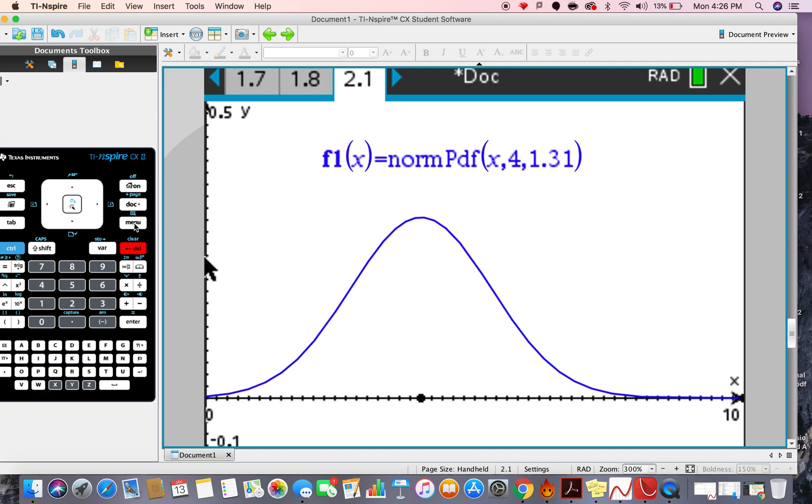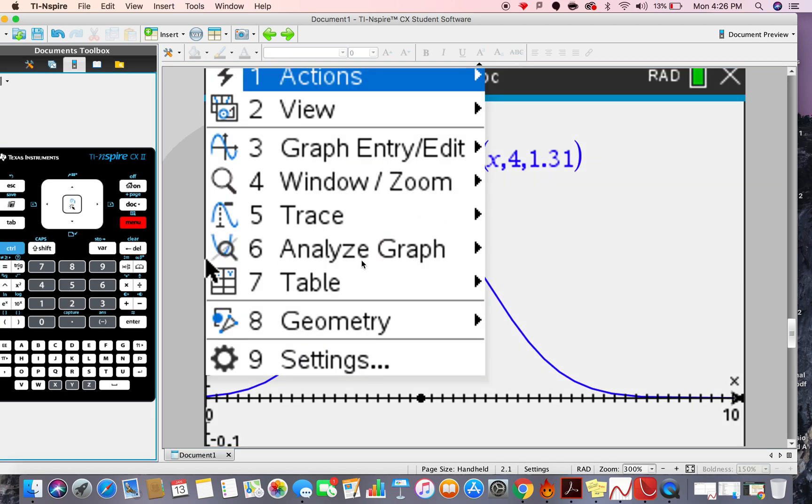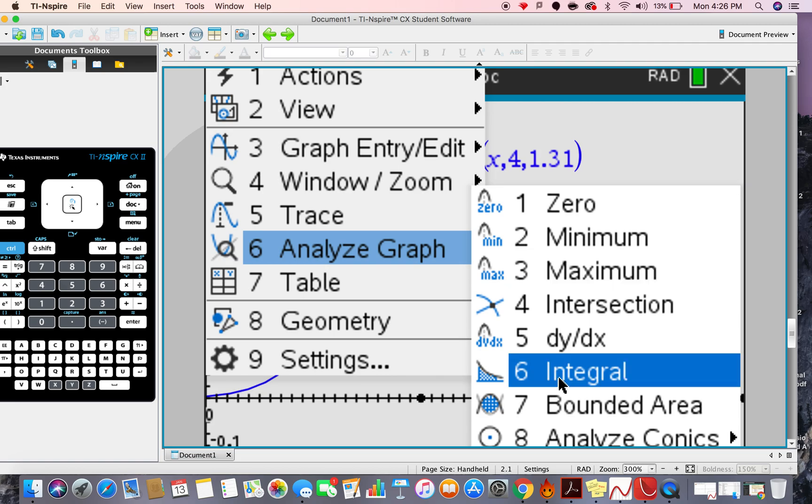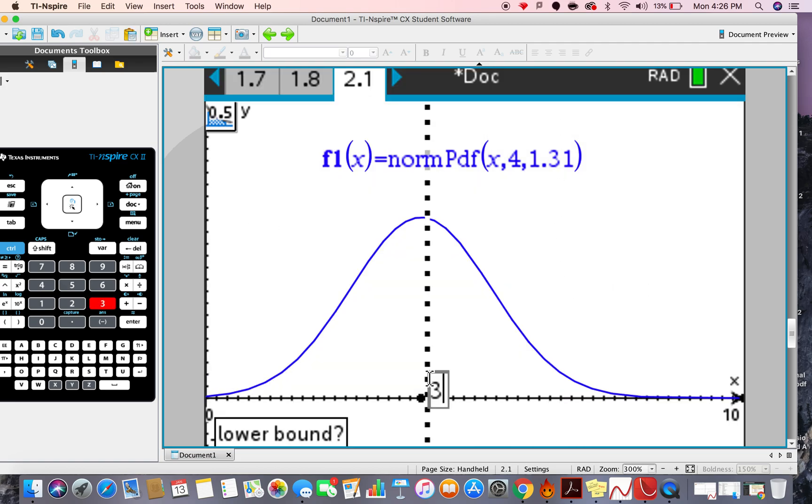So, what about how many plants, what percentage of all the plants in my greenhouse have a height, let's say, between 3cm and 4cm? Menu, Analyze Graph, Integral, type in 3, Enter. Type in 4, Enter. Now, can you see that? So, 0.277, so as a percentage, that's 27.7. So, 27.7% of all my plants have a height between 3 and 4cm. Now, that's assuming that the real-life data, as in the heights of plants in my greenhouse, follow this type of distribution, a normal distribution.